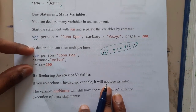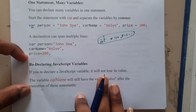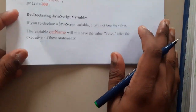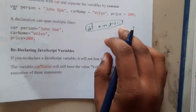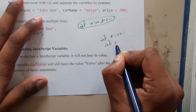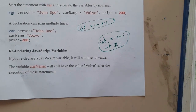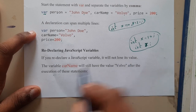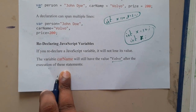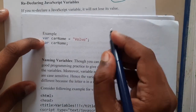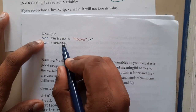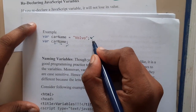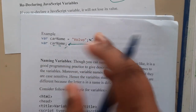You can also define variables in multiple lines — no issue. Regarding redeclaration in JavaScript: in most languages if you declare int x = 10 and then declare x again, it is not allowed. But JavaScript will allow it. If you redeclare a variable without a new value, it will not lose its original value. For example, if carName equals 'Volvo' and you redeclare it empty, it will still hold 'Volvo.'